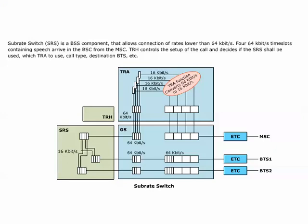Sub-Rate Switch is a BSS component that allows connection of rates lower than 64 kilobits per second. Four 64 kilobits per second time slots containing speech arrive in the BSC from the MSC. TRH controls the setup of the call and decides if the SRS shall be used, which TRA to use, call type, destination BTS, etc.